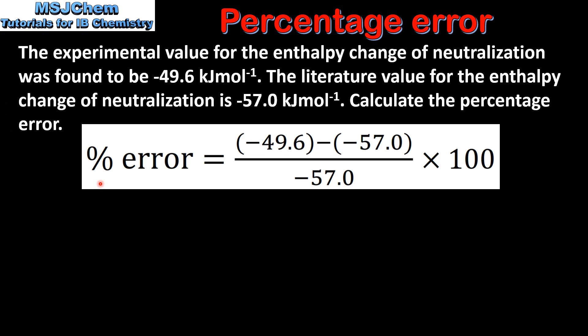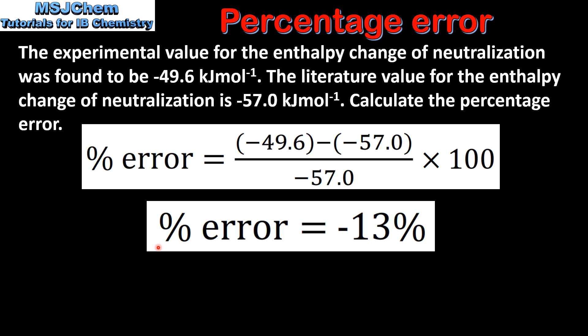So here's the equation for calculating percentage error. We have our experimental value minus the theoretical value, divided by the theoretical value, multiplied by 100. This gives us a percentage error of -13%.